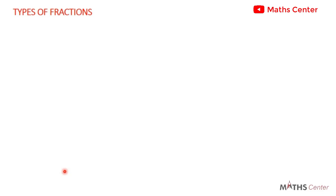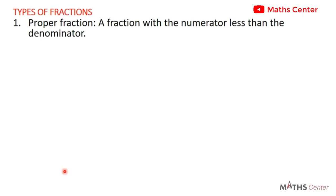We want to look at some types of fractions. The first one we are going to consider is what we refer to as a proper fraction — a fraction with the numerator less than the denominator. So whenever the numerator is smaller than the denominator, we say that you have a proper fraction. For example, 1 over 2, 5 over 7, and 4 over 9 — in each case the numerator is smaller than the denominator.